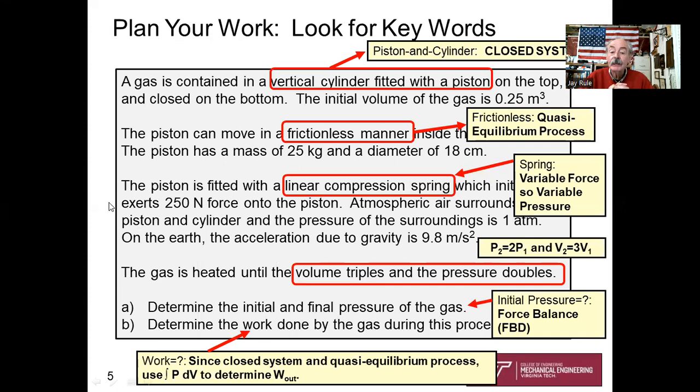First, we'll look for keywords. Piston and cylinder, closed system. In your solution, somewhere on your sketch, you're going to want to write the word closed system so you communicate that you recognize this is a closed system, not an open system. Piston moves in a frictionless manner. That's quasi-equilibrium process.